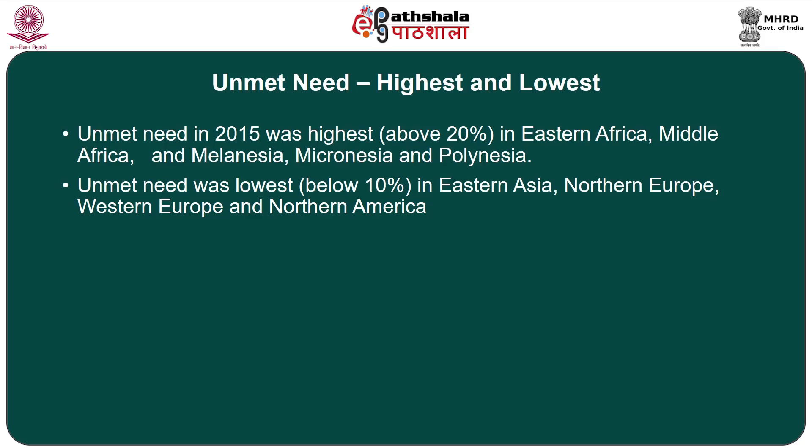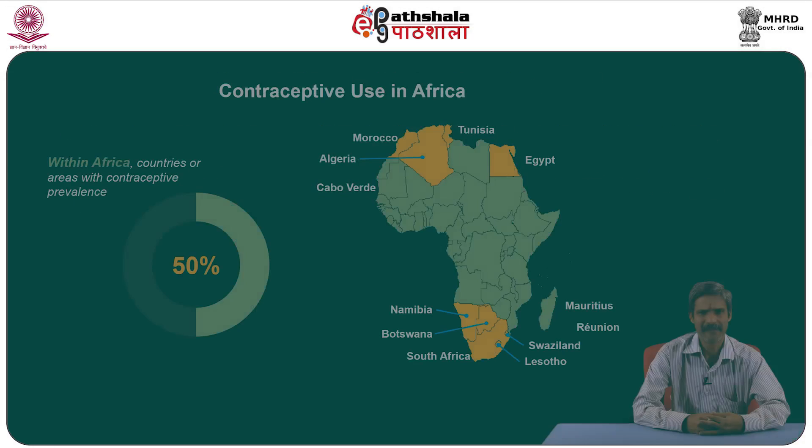Unmet need in 2015 was highest, meaning more than 20 percent, in Eastern Africa, Middle Africa, Melanesia, Micronesia, and Polynesia. On the other hand, unmet need for family planning was lowest — below 10 percent — in Eastern Asia, Northern Europe, Western Europe, and Northern America.